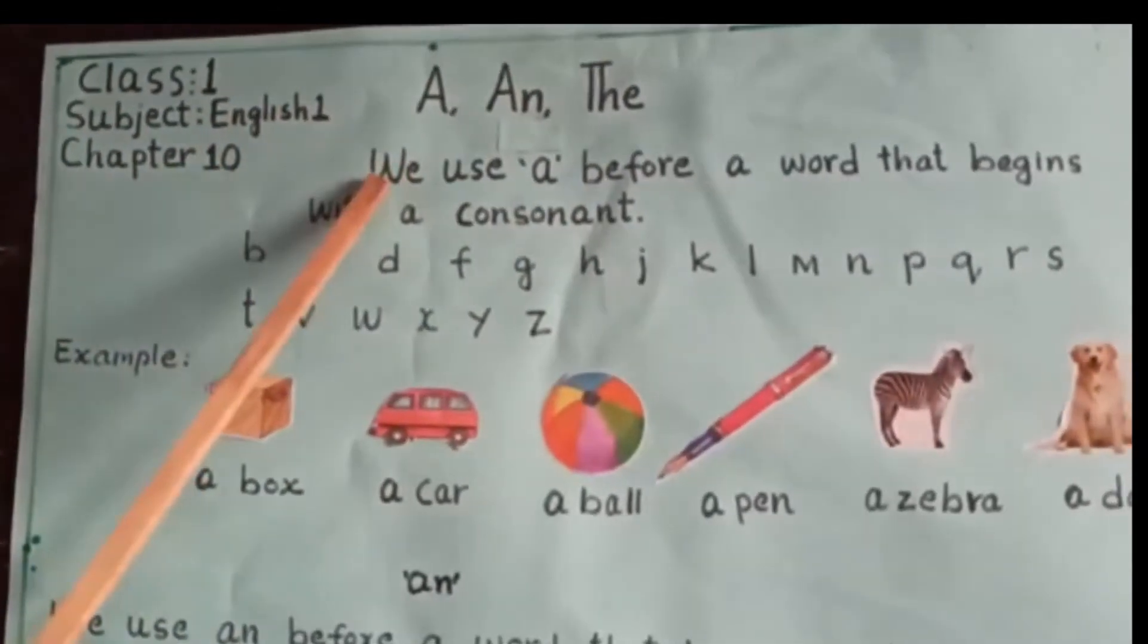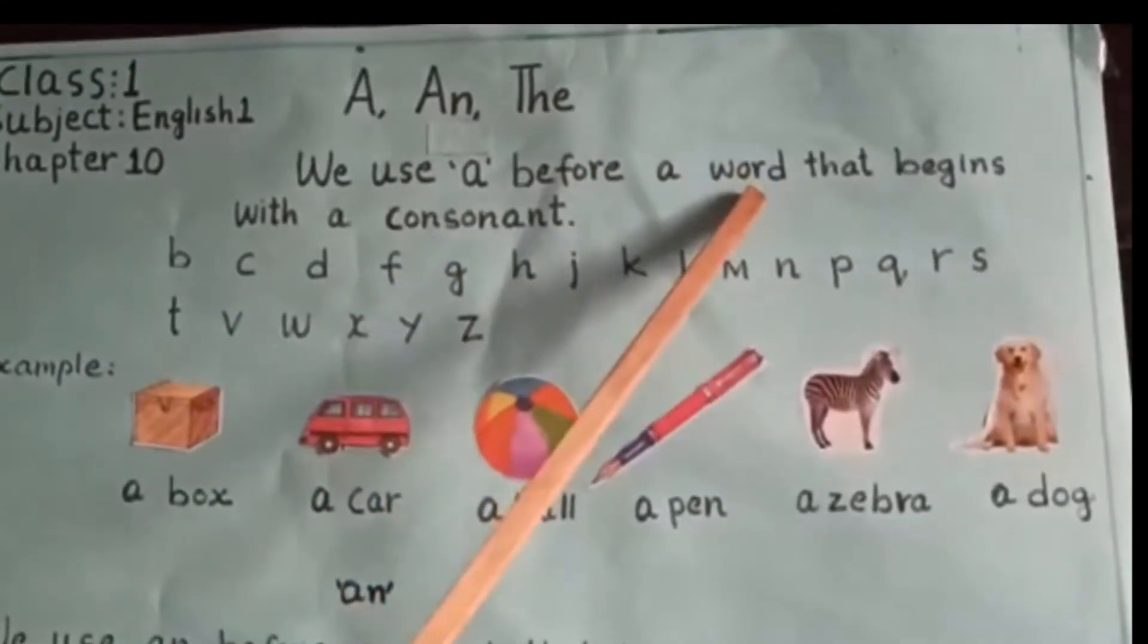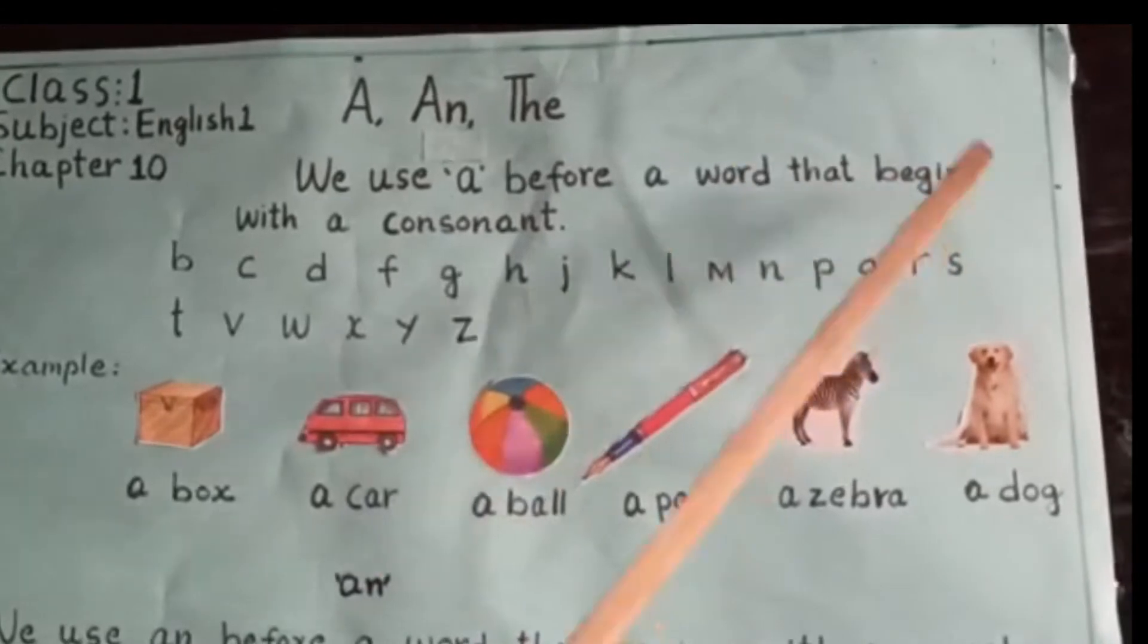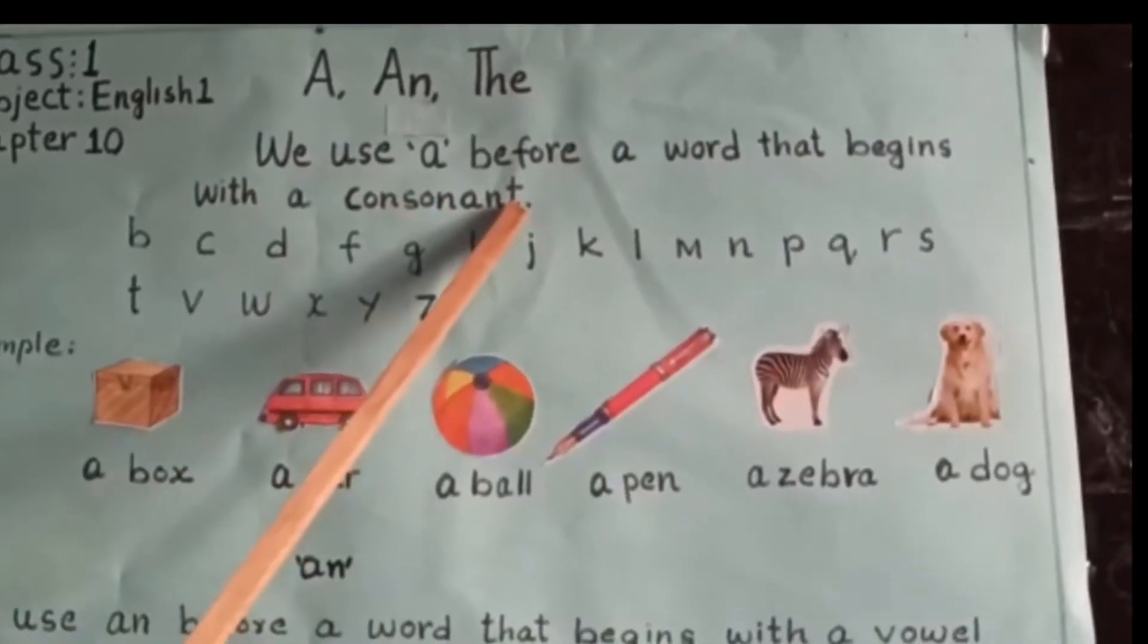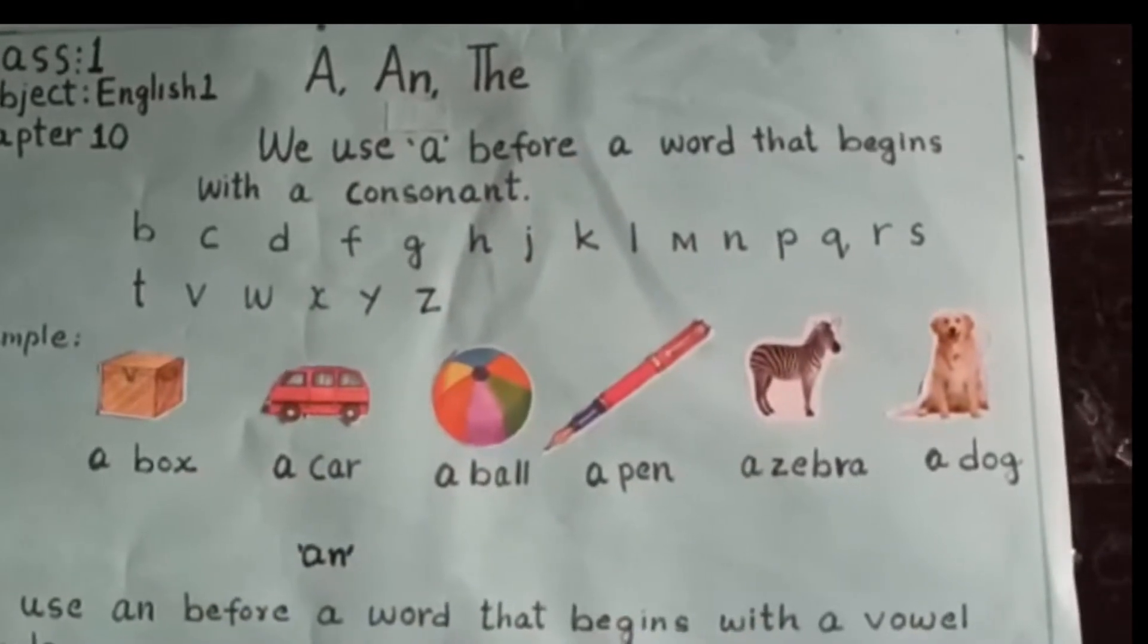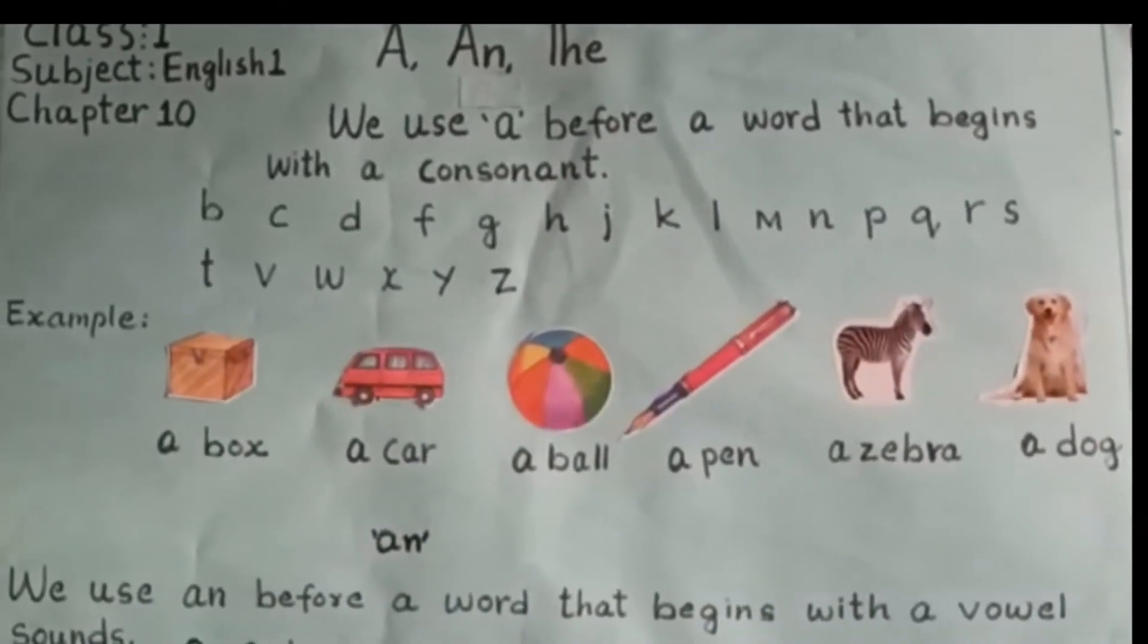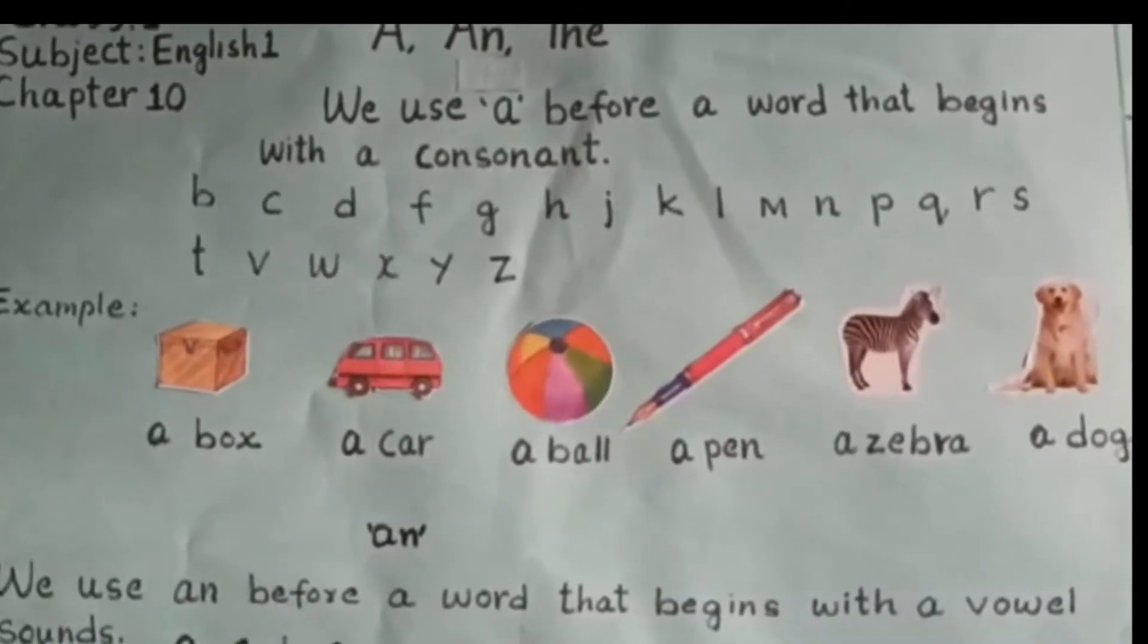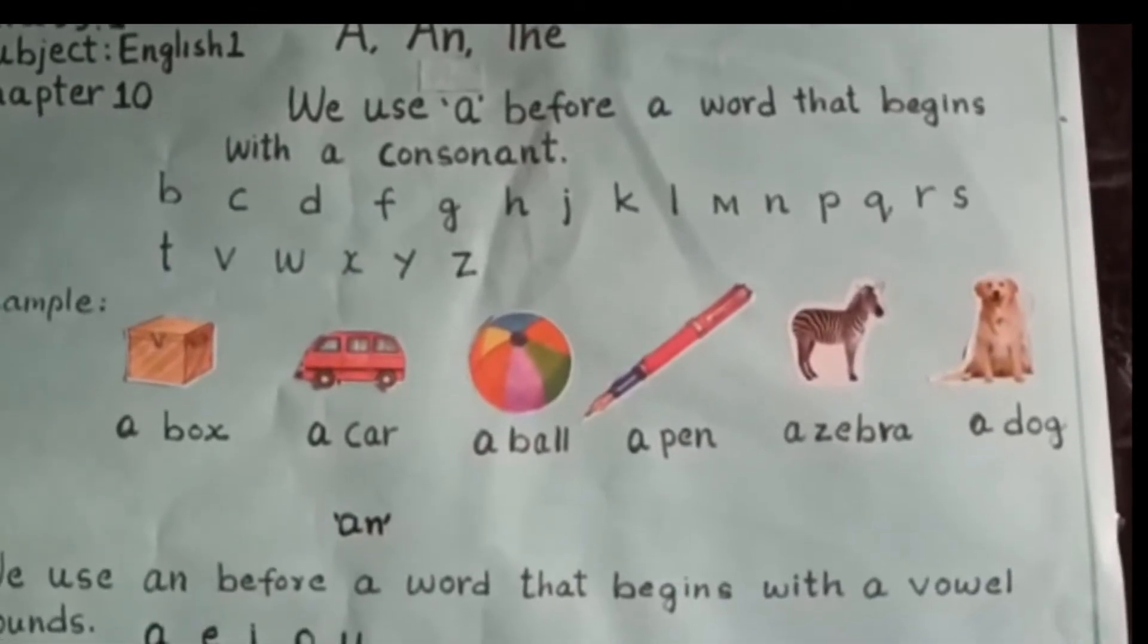We use a before a word that begins with a consonant. You know there are 26 letters in the English alphabet. A, E, I, O and U are called vowels.